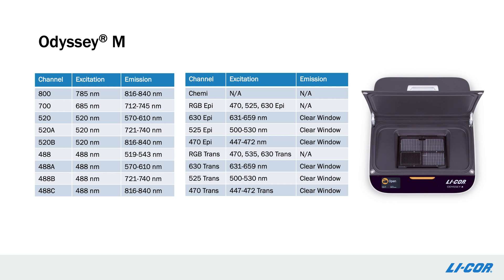What's really exciting about Odyssey-M is the wide array of imaging channels available. In addition to two near-infrared fluorescent channels, Odyssey-M has two fluorescent channels in the visible range, as well as channels that can image colorimetric and luminescent wavelengths.